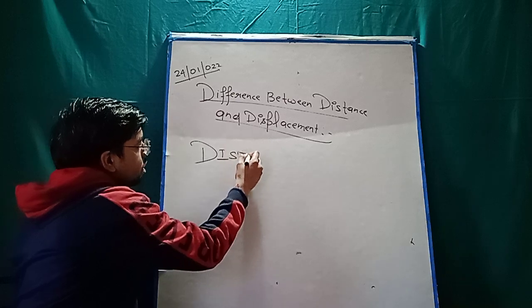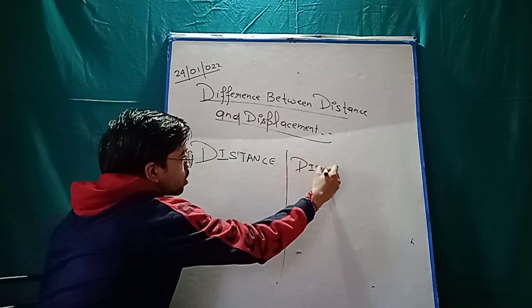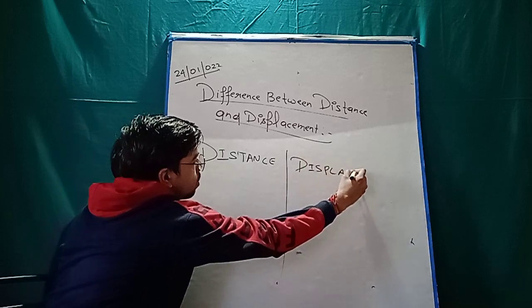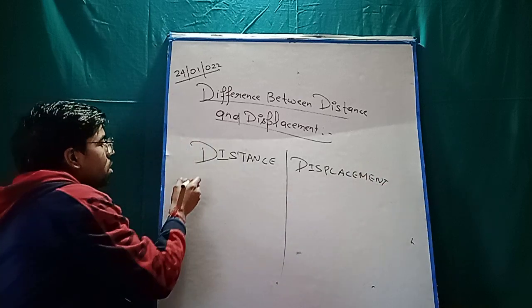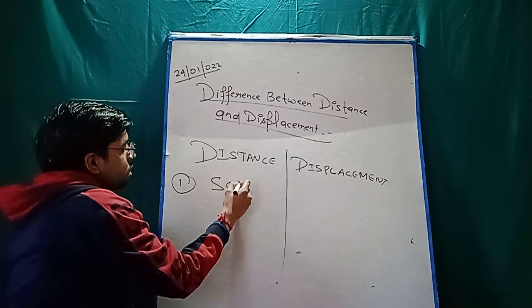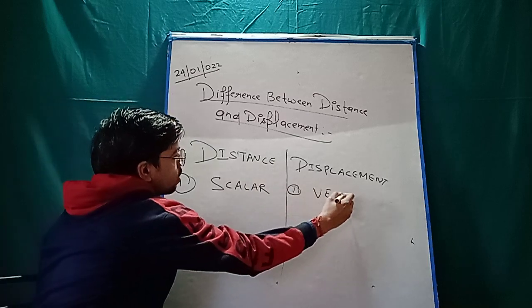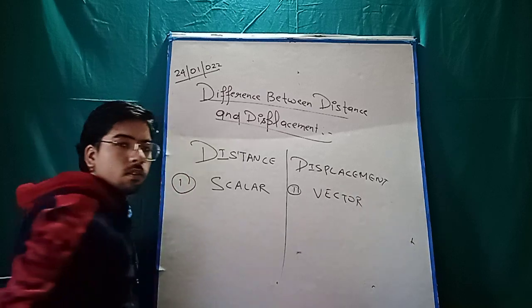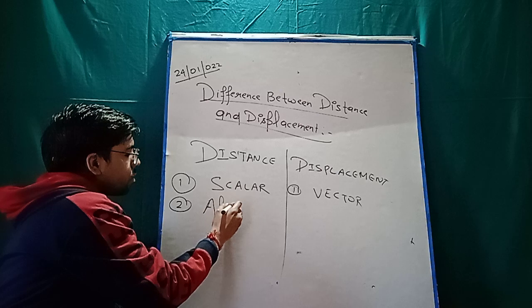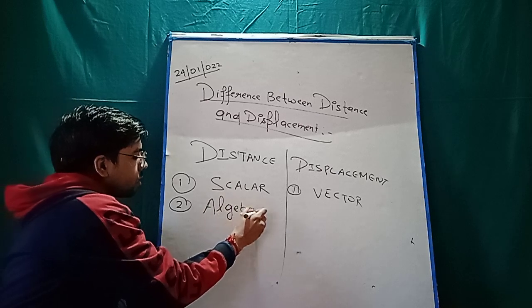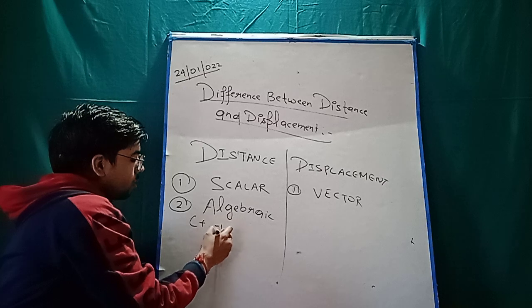Next difference — distance follows algebraic law. What kind of law? Algebraic law — like plus, minus.